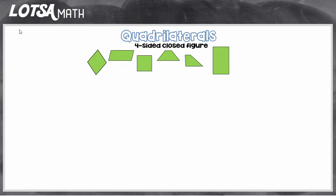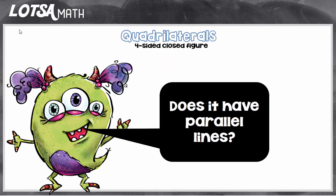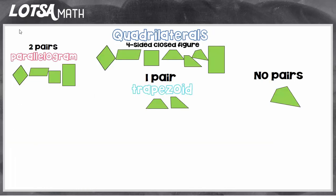We do that by asking ourselves questions. The first question is: does it have parallel lines? If it has two pairs of parallel lines it becomes a parallelogram. If it has one pair of parallel lines it's called a trapezoid — the top and bottom are parallel but not the sides. If it has no pairs of parallel lines it's just called a quadrilateral; it doesn't have a special name.